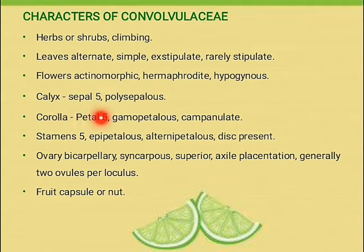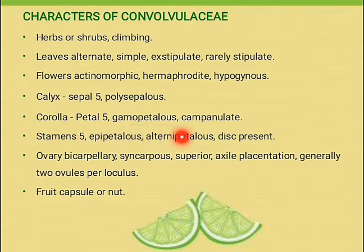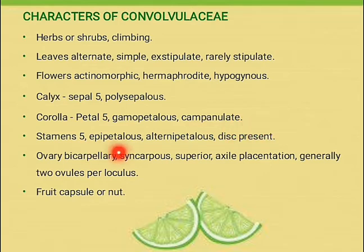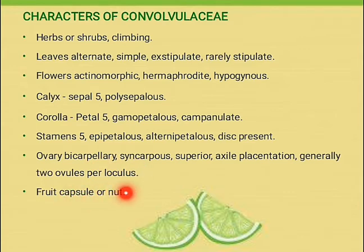Corolla consists of 5 petals, gamopetalous, campanulate, that means bell-shaped corolla is present. Stamens: 5, epipetalous, alternate petalous, that means stamens are present above the petal and alternate with the petals. Disc present. Ovary bicarpellary, syncarpous, that means ovules are fused, superior ovary. Axile placentation, generally two ovules per locule. Fruit capsule or nut type.